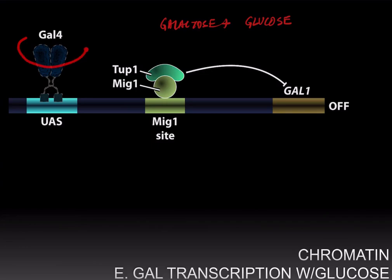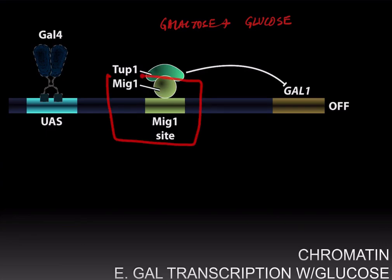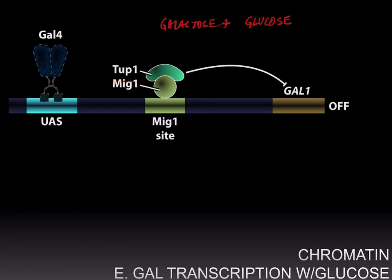We can't rely on GAL80 to inhibit recruitment of RNA polymerase by the GAL4 activation domain, since galactose is present and GAL80 has been sequestered by GAL3. However, there is a binding site for a transcription factor called MIG1 — a repressor — near the upstream activating sequences. MIG1 recruits a histone deacetylase called Tup1 that deacetylates the chromatin at the GAL1 promoter.